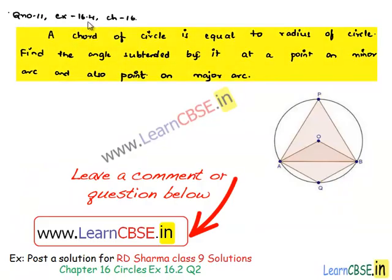Now, let us discuss question number 11 from exercise 16.4, chapter 16. A chord of a circle is equal to the radius of the circle. Find the angle subtended by it at a point on the minor arc and also a point on the major arc.